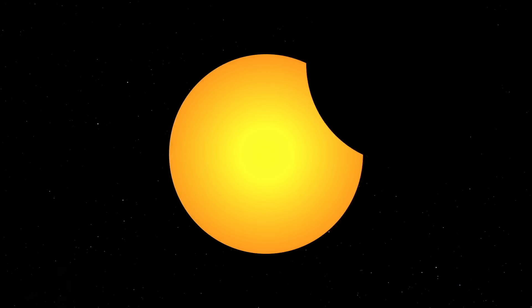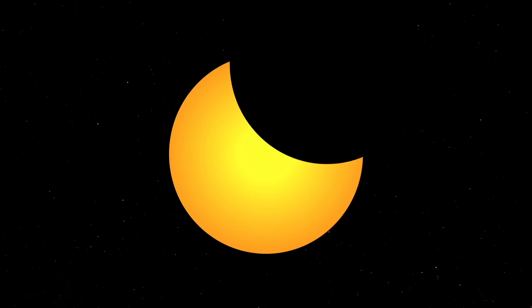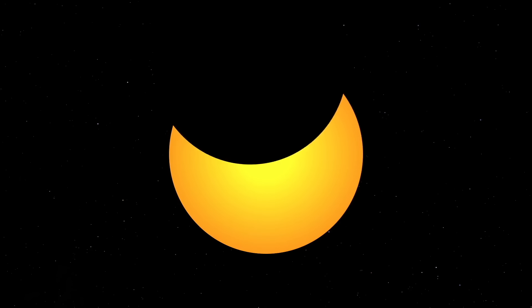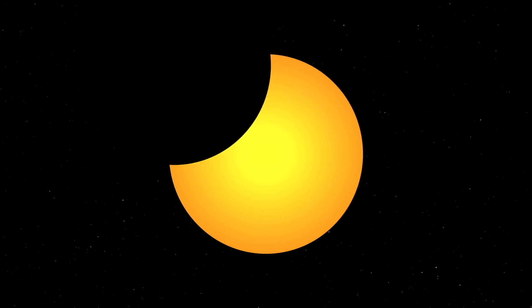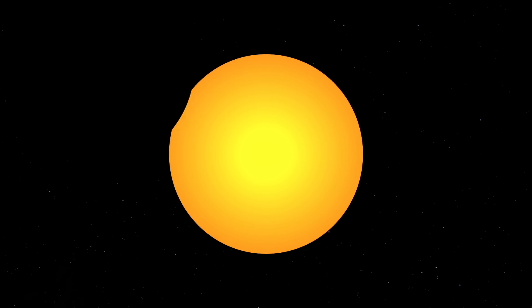Whenever any part of the sun's surface is exposed, you must use some form of protection. During a partial eclipse, you can never look directly at the sun.